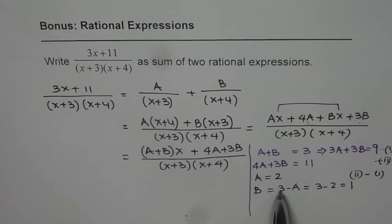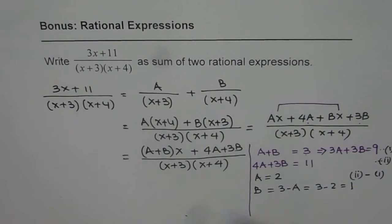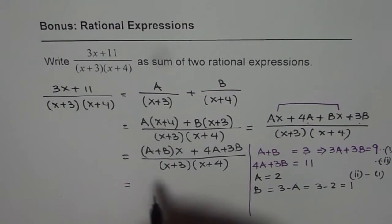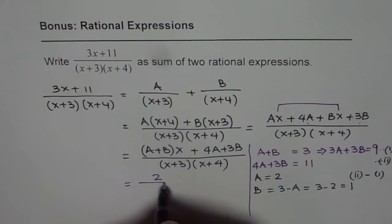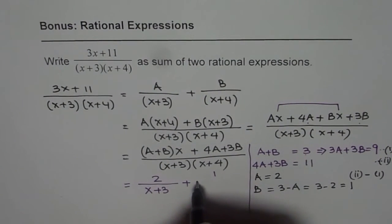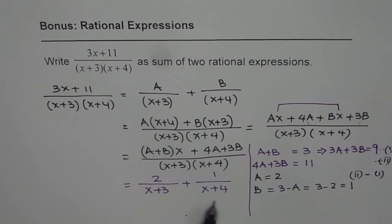If I substitute these values, 2 for A and B for 1, in my original expression where we started with, we could say that this equals A is 2. So it equals 2 over (x plus 3) plus B is 1, 1 over (x plus 4). So that way, we can write the given rational expression as sum of 2.